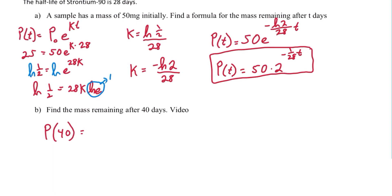p of 40 equals 50 times 2 to the negative 1 over 28 times 40. Plugging that into our calculator, we'll get roughly 18.6 milligrams.